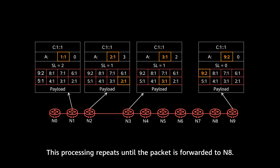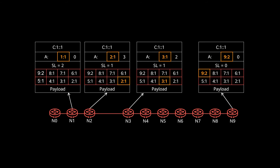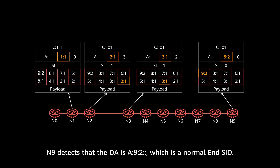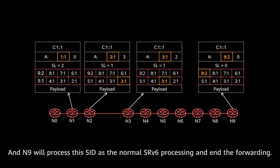This processing repeats again and again until the packet is forwarded to node 8. When the packet is forwarded from node 8 to node 9, node 9 detects that the DA is 8::9:2::, which is a normal End SID allocated by itself. So node 9 will process this SID as normal SRV6 processing and end folding.